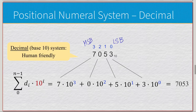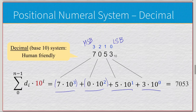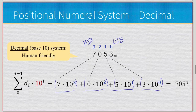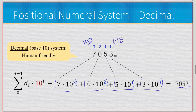In this case, we have 7053 which has positions 0, 1, 2, and 3 starting at the least significant bit to the most significant bit. Least significant because if you change that 3, it has the least impact — 7053 to 7054, not a big difference. Whereas changing the 7 means it's now 8053 or 6053 — a change of a thousand values. So the most significant bit is the most impactful on the change, and the least significant bit is the least impactful. The formula is a summation from 0 to n-1 of digit_i times 10 to the i.